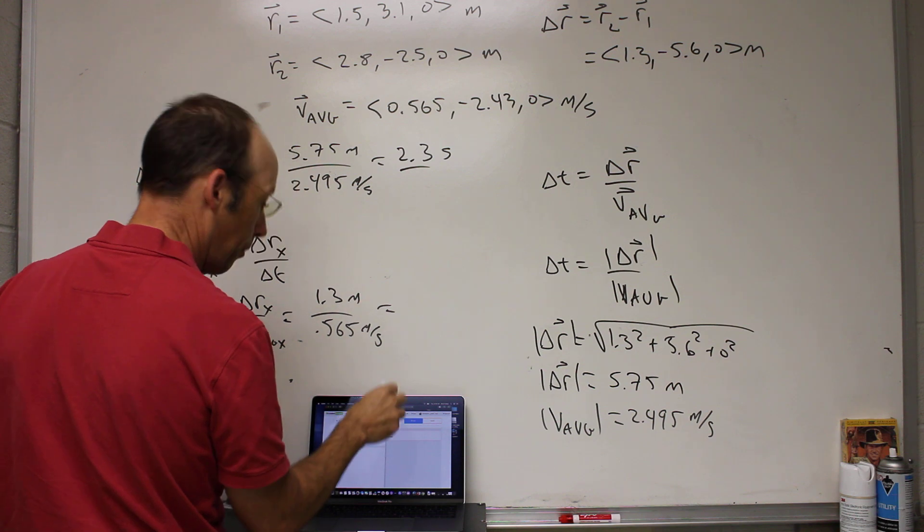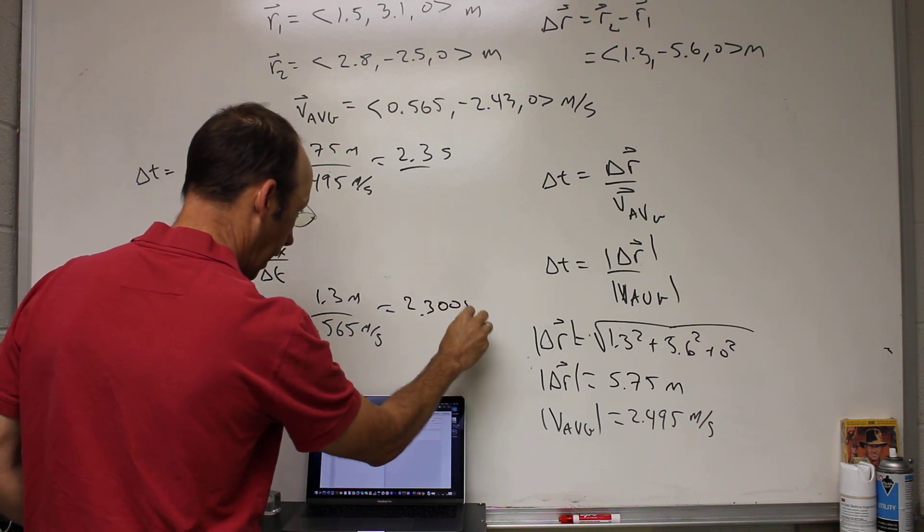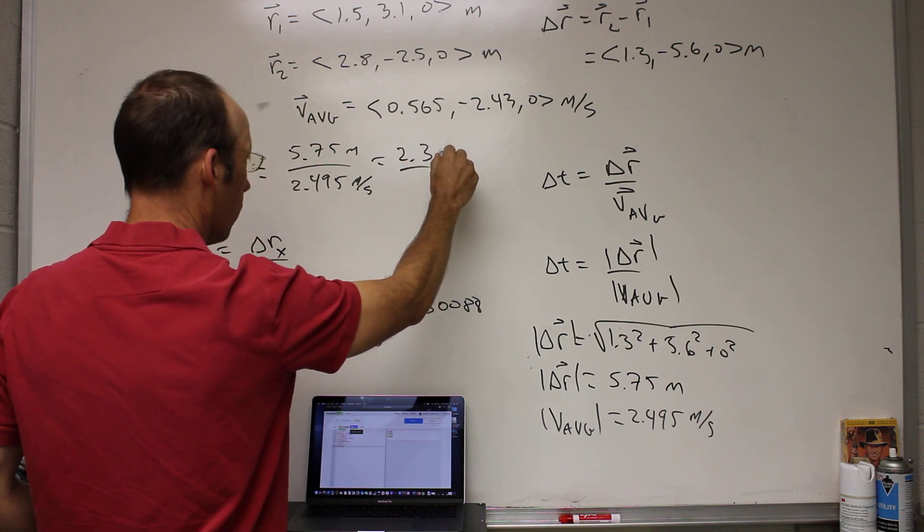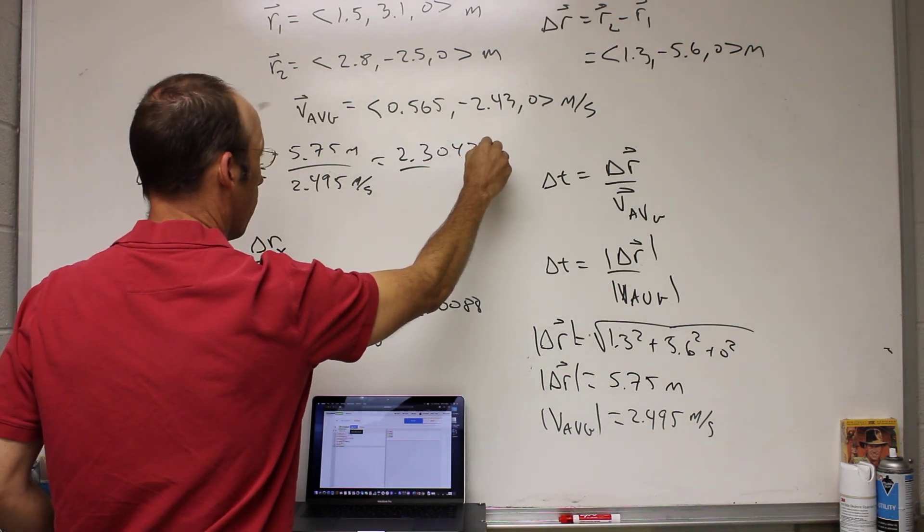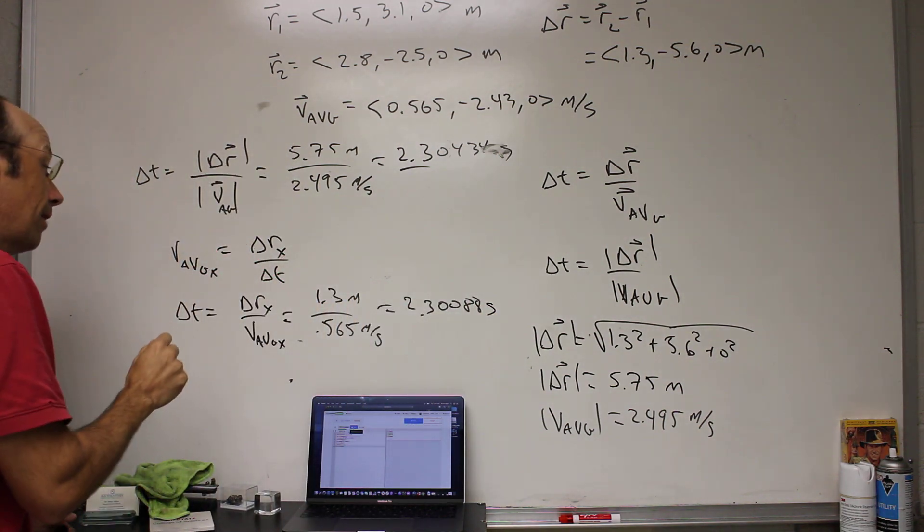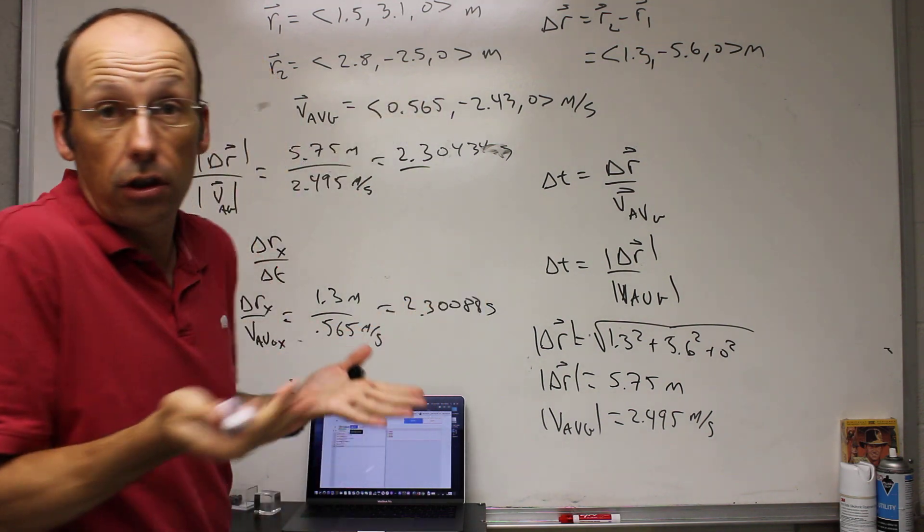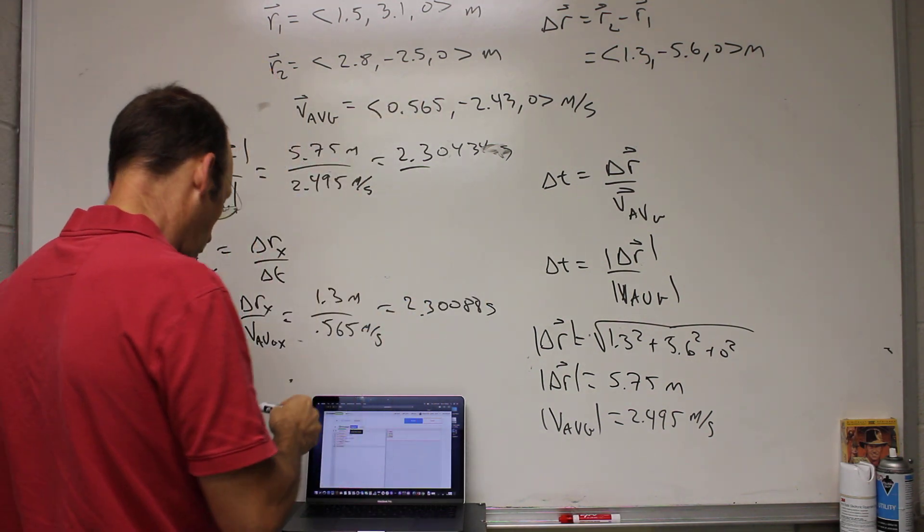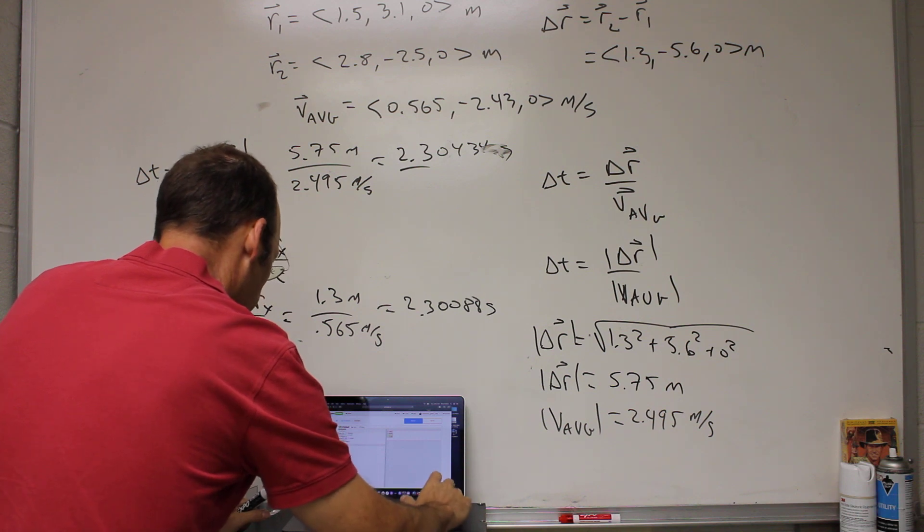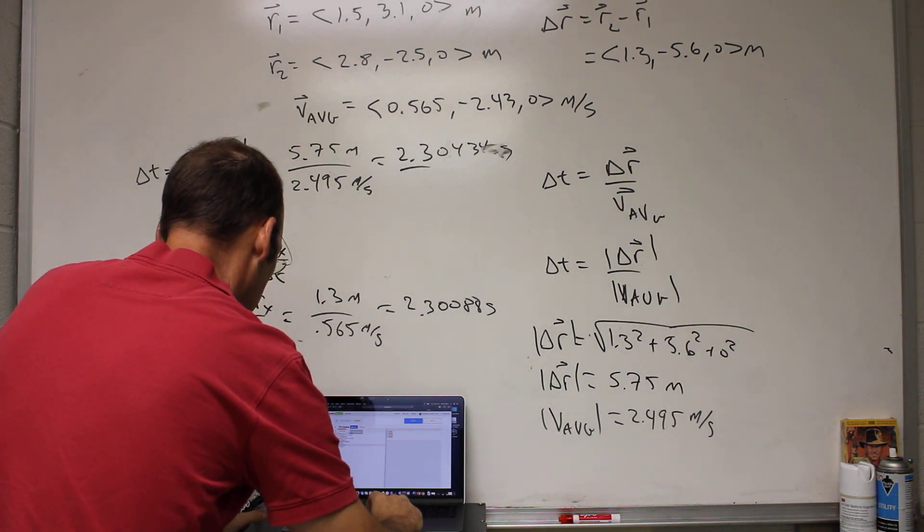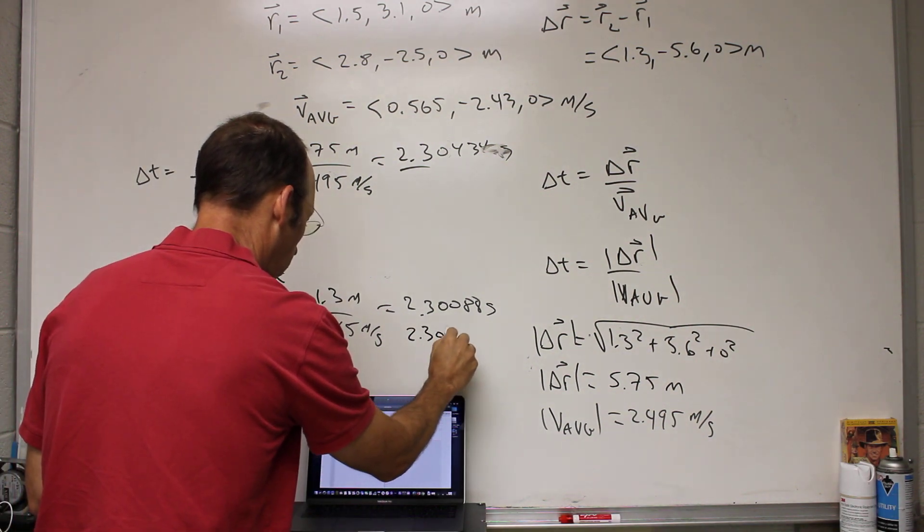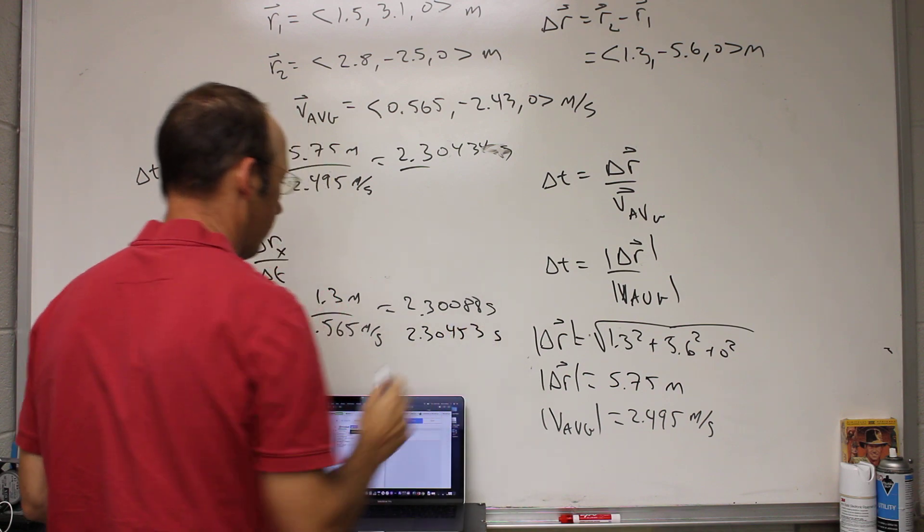I get a slightly different number. I get 2.30088, and the other one I had was 2.30434 seconds. Now there's one other way to do it. What if I did the same thing with the y direction? Because it should work in the y direction too. So if I do this in the y direction, I'm just going to change these things right here to y. The z direction is not useful because those are 0. For in the y direction, I get 2.30453 seconds. Close.